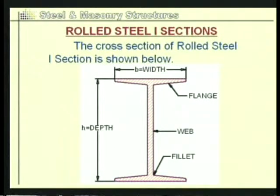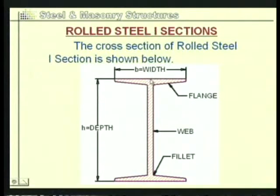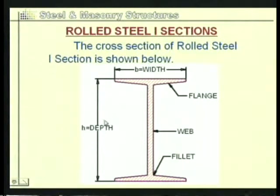A rolled steel I section corresponds to the alphabet I. It has two flanges — a top flange and a bottom flange — connected by means of a web. The junction of the web and the flange is called the fillet. The height from the top of the topmost flange to the bottom of the bottom flange is called the depth of the I section, and the width of the flange is denoted by B.